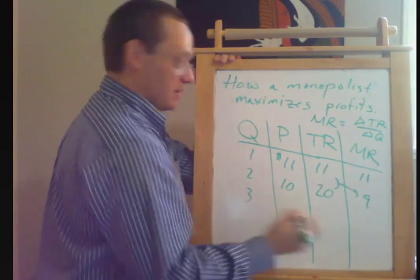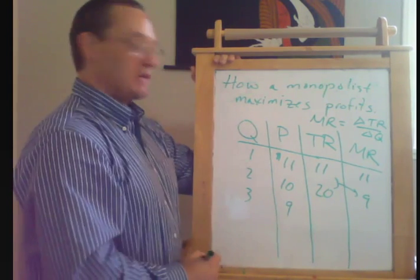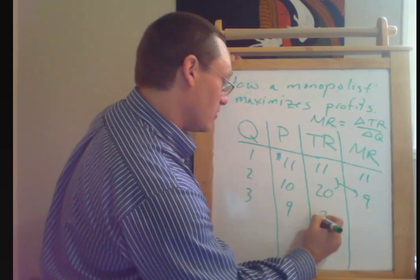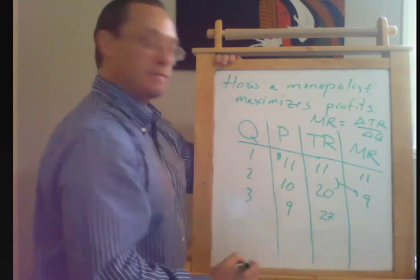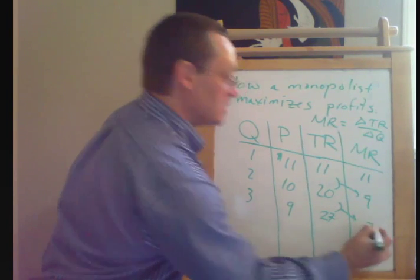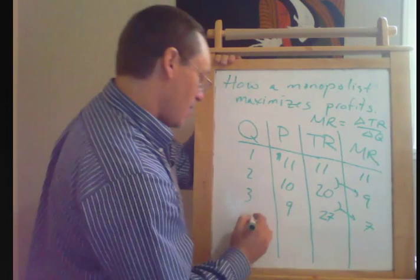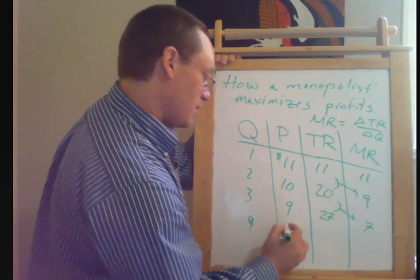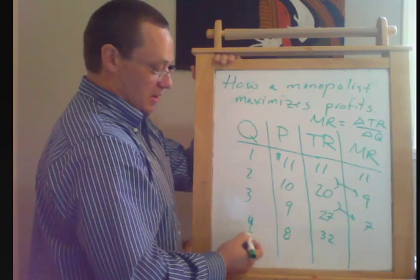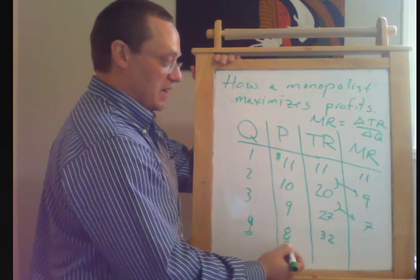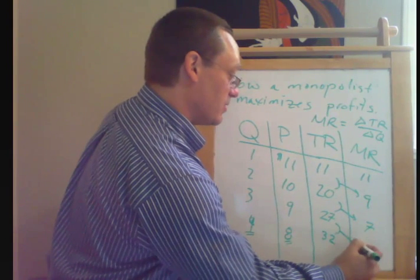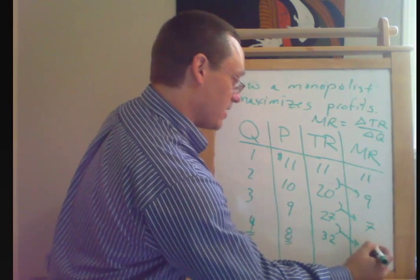And then if we have three units produced and that makes us have to cut the price to nine bucks, then now our total revenue is 27. And we can see that the marginal revenue is seven. And one more here. If producing four means that we have to cut our price to eight to be able to sell them all, then the marginal revenue of this fourth one is $5.